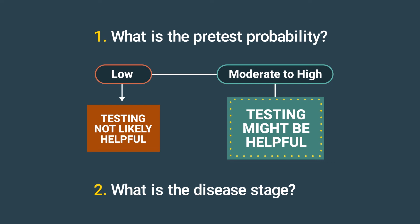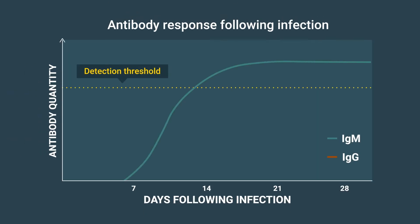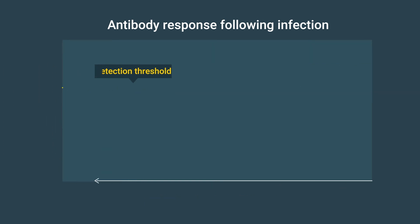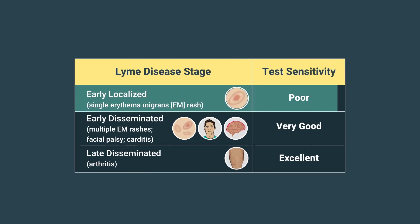However, the disease stage strongly affects the sensitivity of serologic testing. The recommended two-step serologic test for Lyme disease is less sensitive at early stages of disease, such as when a patient presents with an erythema migrans rash, which on average presents only seven days after infection. Because serologic testing depends on the detection of antibodies, which can take several weeks to develop after initial infection, test sensitivity is poor for patients with erythema migrans, a manifestation of early localized Lyme disease.